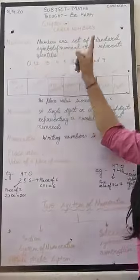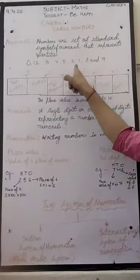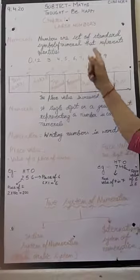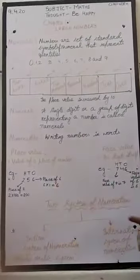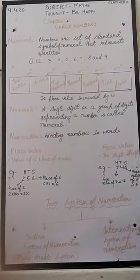We start the numbers from 0 and end it in 9. So these are the digits which are used to form a number. And in this class you will learn about 8 digit numbers, 9 digit numbers and 10 digit numbers.